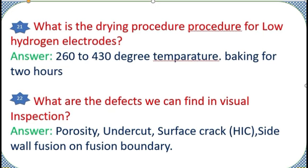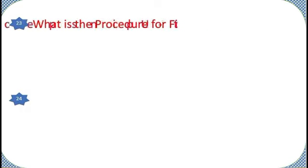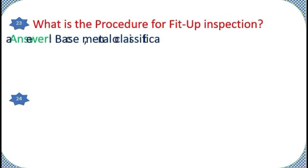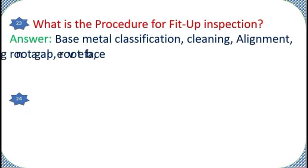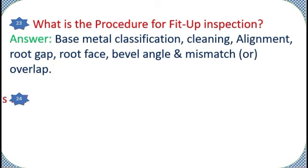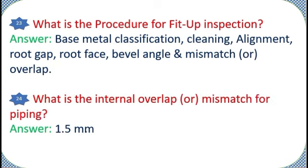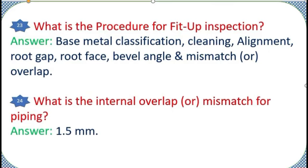What is the drying procedure for low hydrogen electrodes? Answer: Porosity, undercut, surface crack, heat, sidewall fusion, on-fusion boundary. What is the procedure for fit-up inspection? Answer: Base metal classification, cleaning, alignment, root gap, root face, bevel angle, and mismatch or overlap.